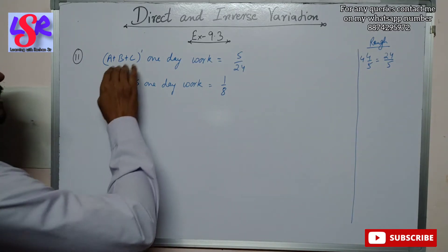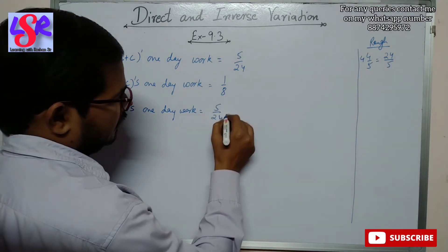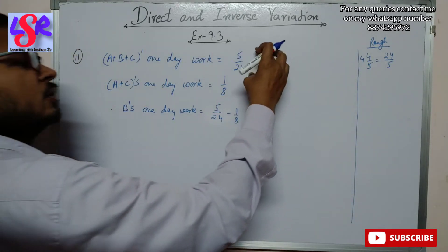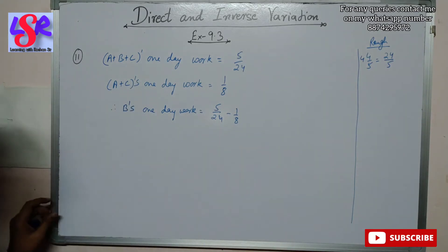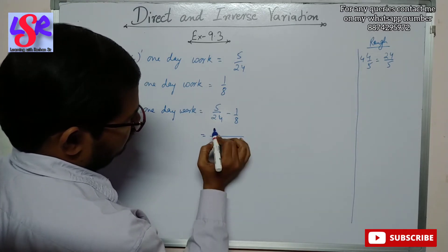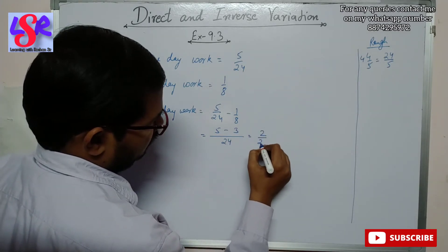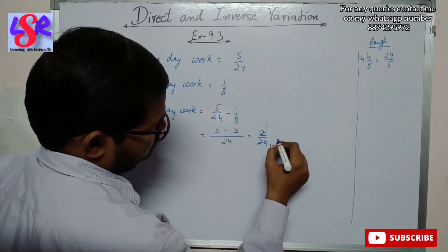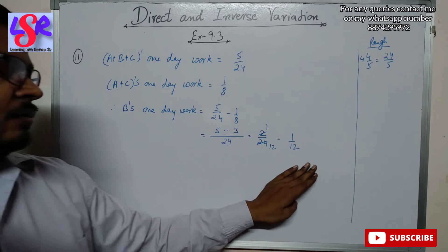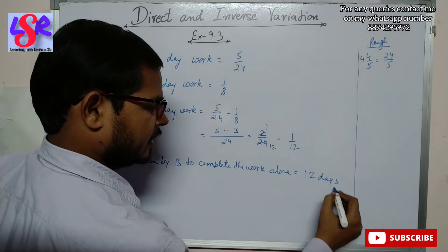We have to find B's one day work. Therefore B's one day work equals 5 upon 24 minus 1 upon 8. Taking LCM of 24 and 8 as 24, we get 5 minus 3 = 2 upon 24, which simplifies to 1 upon 12. So time taken by B to complete the work is 12 days as the answer.